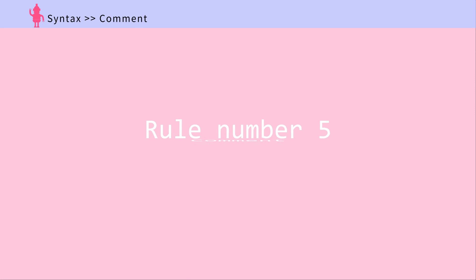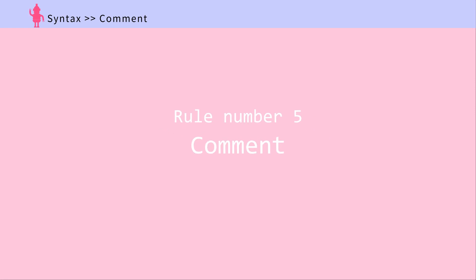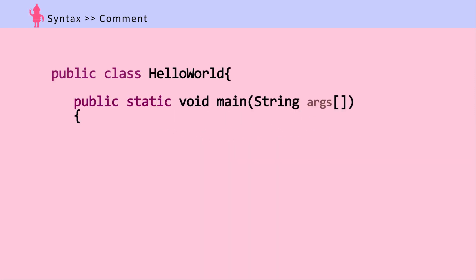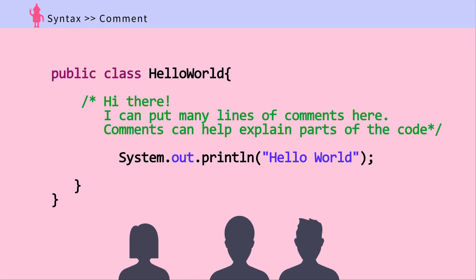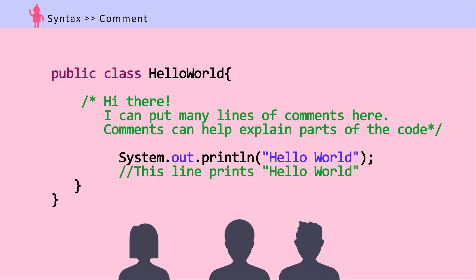Rule number five: you can add comments to your code — multi-line or single line. When working in teams, you are not the only one reading your code, so it helps to add comments to explain your code. As your code gets more complex, commenting is a great way to make notes to remind yourself of what the code intends to do.